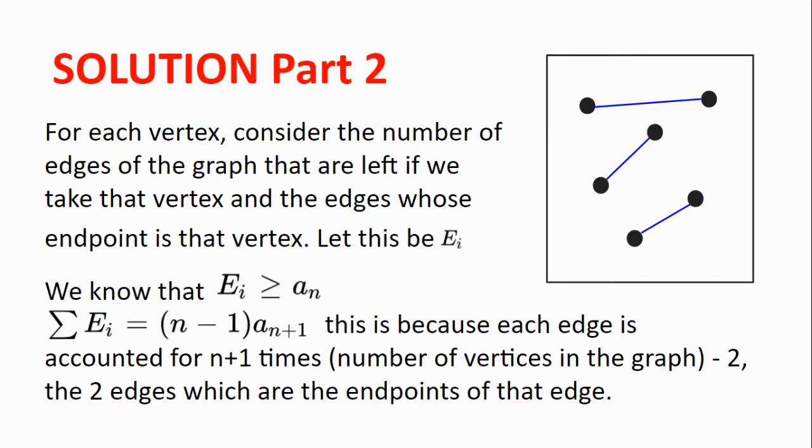Now for each vertex of that new graph, consider the number of edges of the graph that are left if we take that vertex and the edges whose endpoint is that vertex. So for example, for this red vertex here, we take that vertex and the edge whose endpoint is that vertex, and our number is 2, because there are two remaining edges. Let this number be E_i. Now we know that E_i must be greater or equal to a_n. This is because this new graph has n vertices and must also satisfy the conditions of the problem, and so must have a_n edges, the minimum number of edges required.